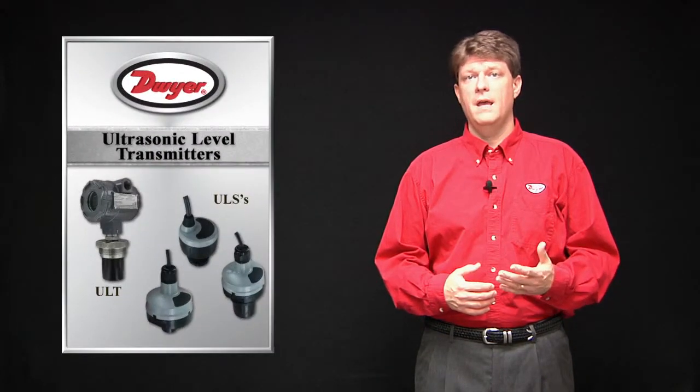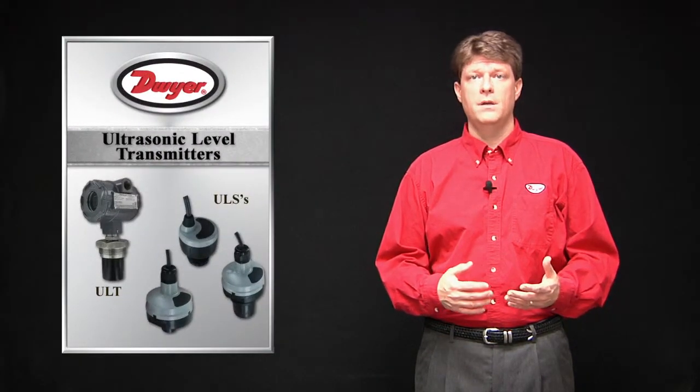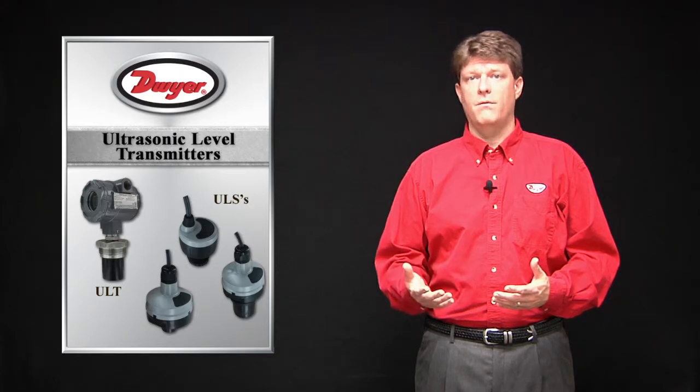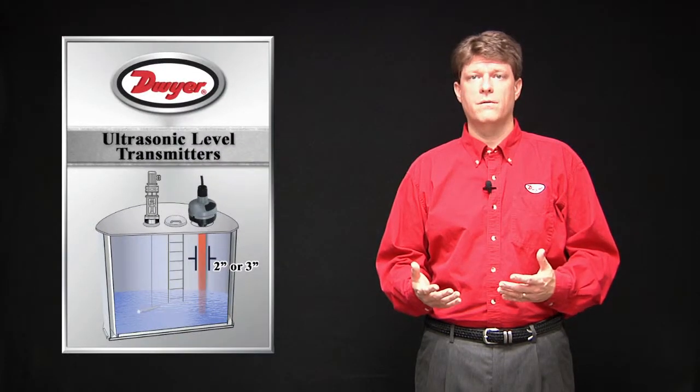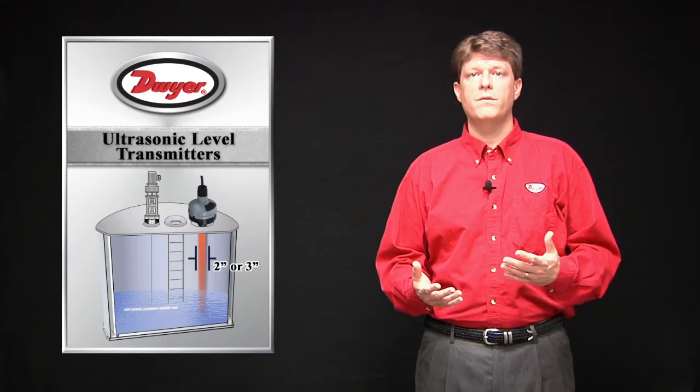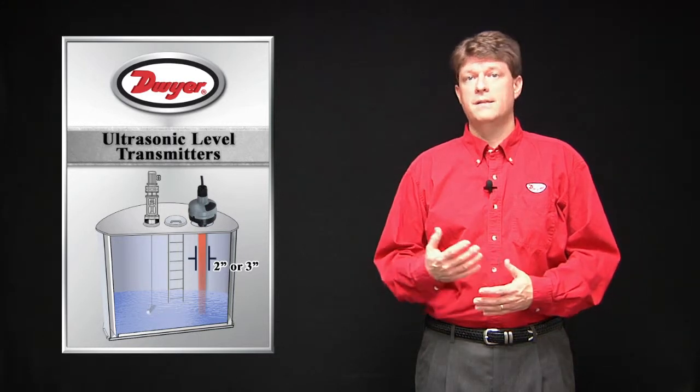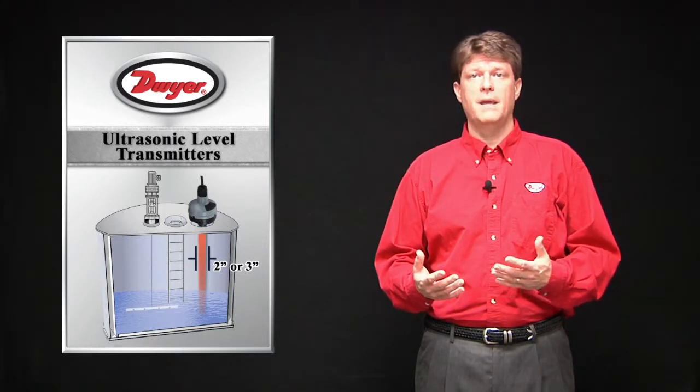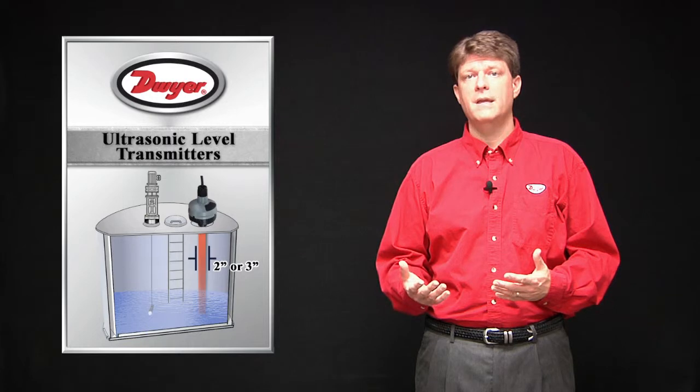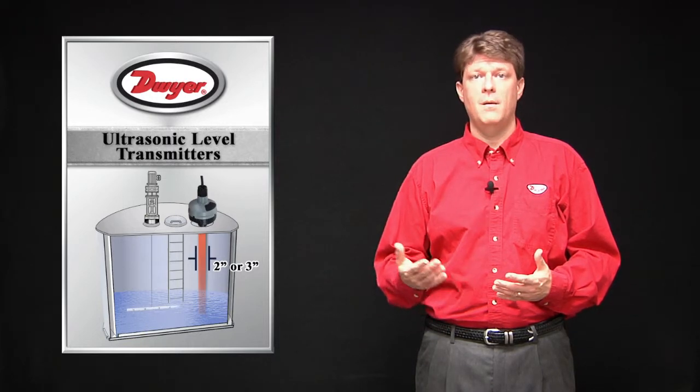The ULT and ULS series level transmitters utilize advanced mapping software creating an effective measuring surface or beam width of no more than 3 inches in diameter, extending from the tip of the sensor down, making ladders, pipes, and other tank intrusions and obstructions non-problematic.